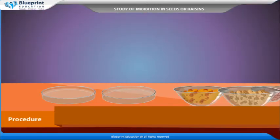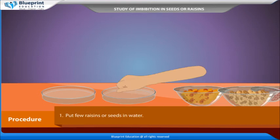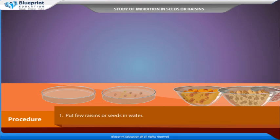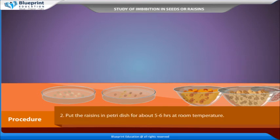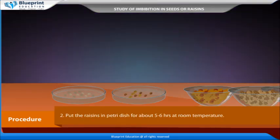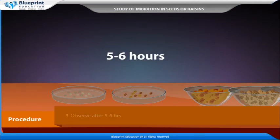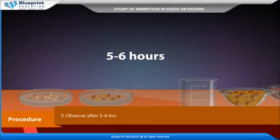Procedure: Put a few raisins or seeds in water. Place the raisins or seeds in a petri dish for about 5 to 6 hours at room temperature. Observe after 5 to 6 hours.